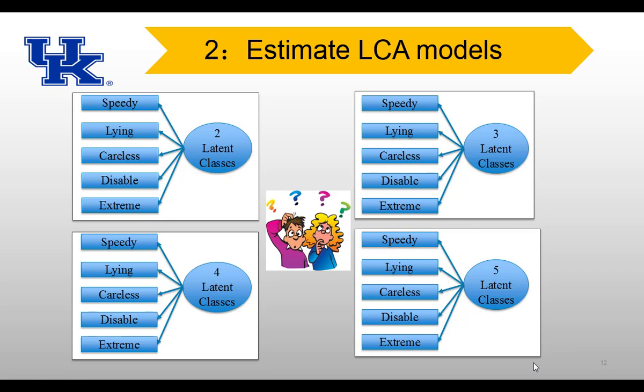Once we have all the indicators, we move to step two: estimate the LCA models. We start with a two-class model, then three-class, four-class, and five-class model. We stop when the model becomes too complex to be useful. Since we have five indicators, I'll stop at the five-class model. In total we have four models, and in M+ we must create individual syntax files for each model — so four input files for these four LCA models.